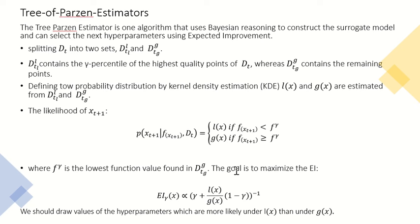And F^γ is the lowest value of function on D_g. And after calculating this probability for all sample points, now we want to find where we have the optimal value, and we can calculate this by maximizing the acquisition function. And the acquisition function here is expected improvement and has a form like this.